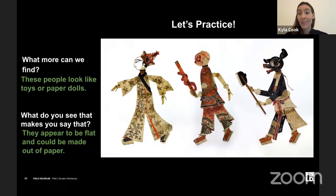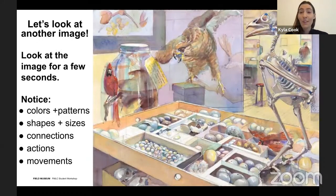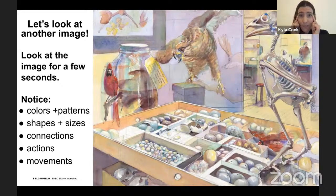Now that you've had a chance to see what this process looks like, we're going to do another example and I'd love for you to join in. We're going to look at another image — give you some time to observe it first, and then ask those three questions. If you'd like to add comments or share what you're noticing in response to the questions, please do so in the chat. Remember: notice the colors and patterns, shapes and sizes, connections between elements, and any action or movement.